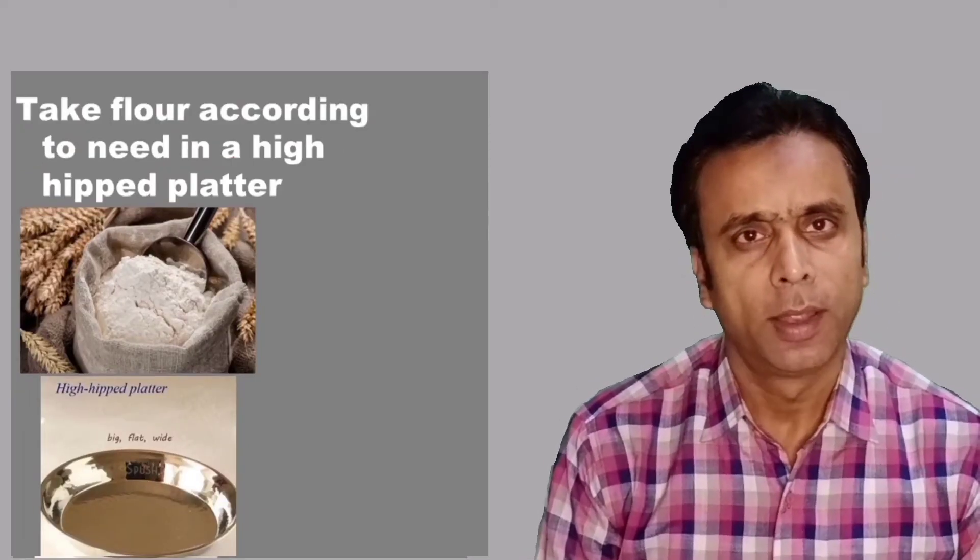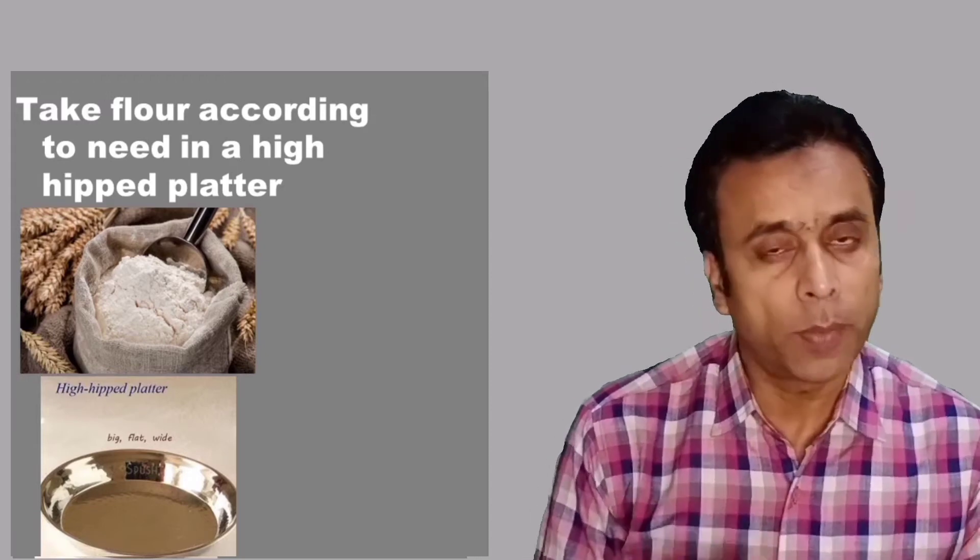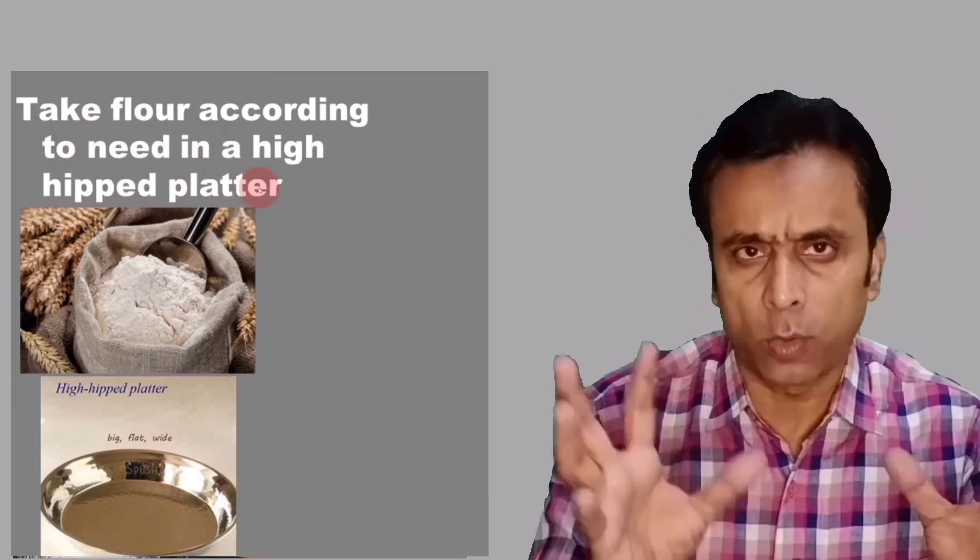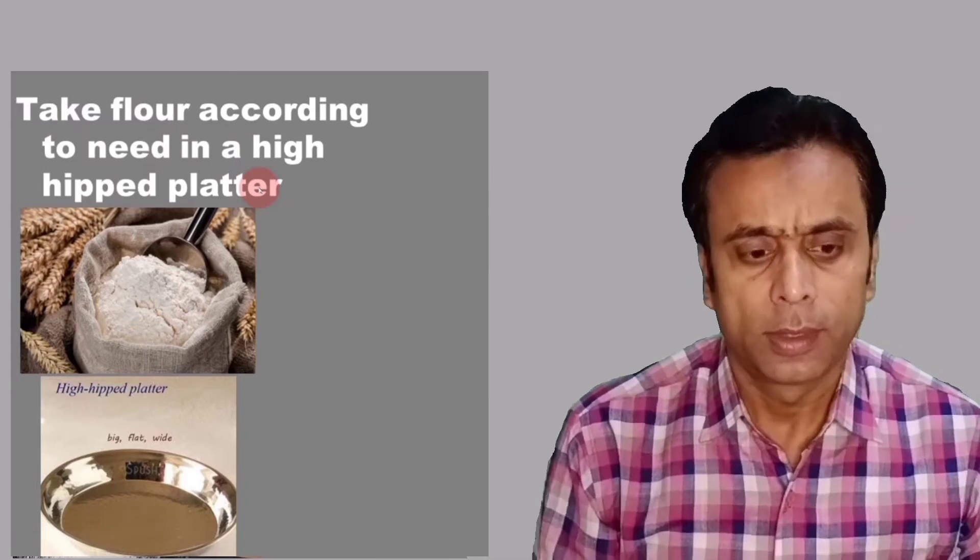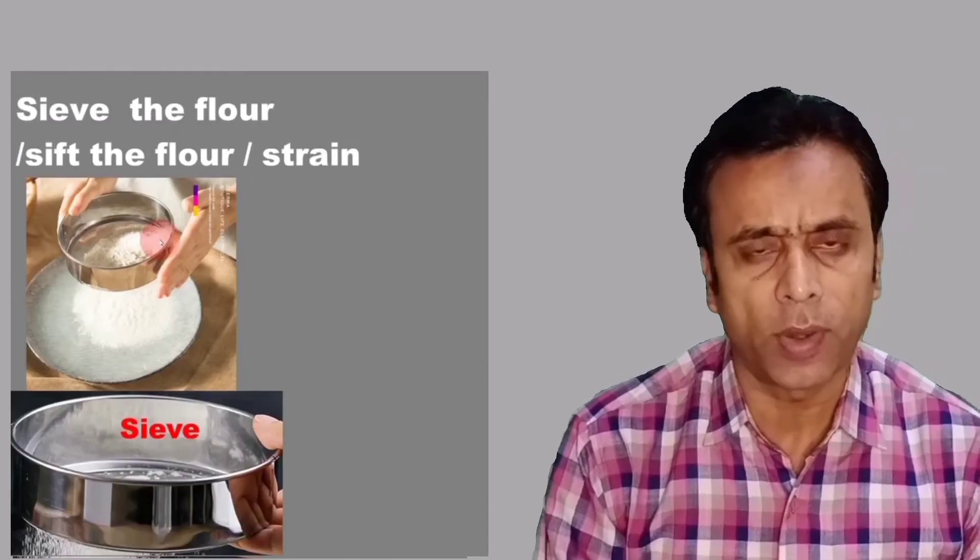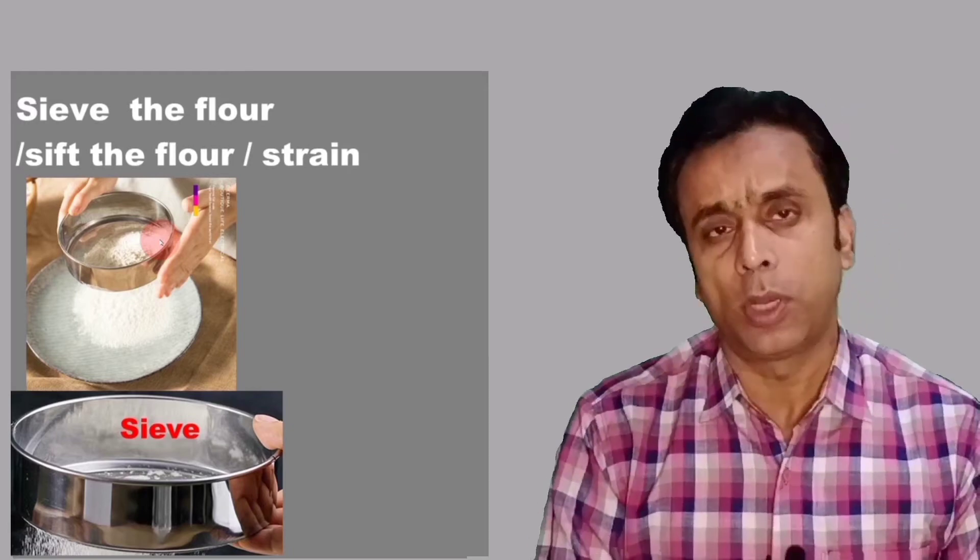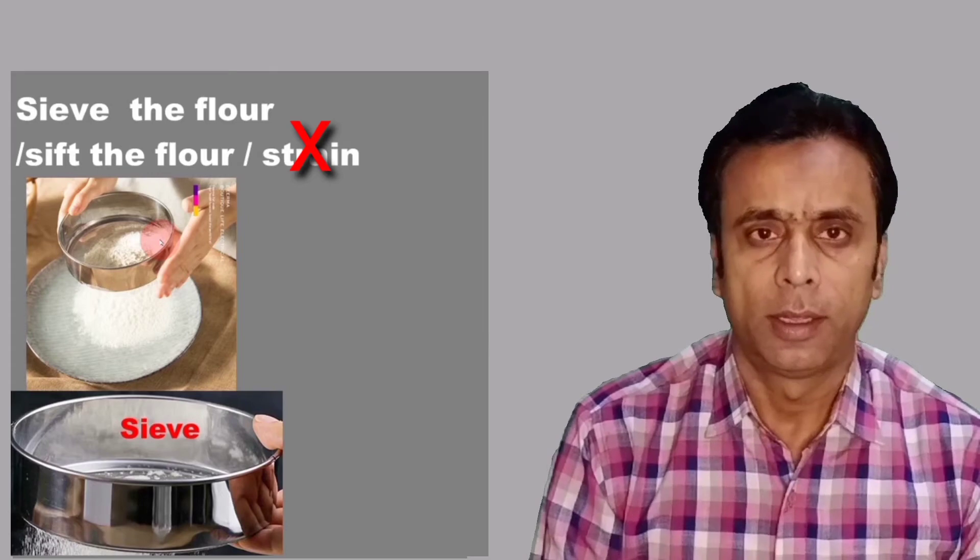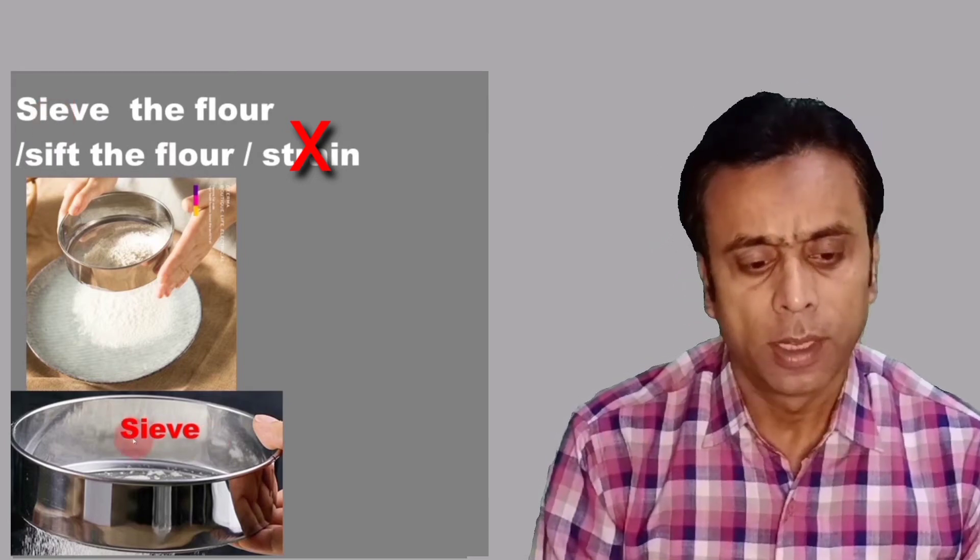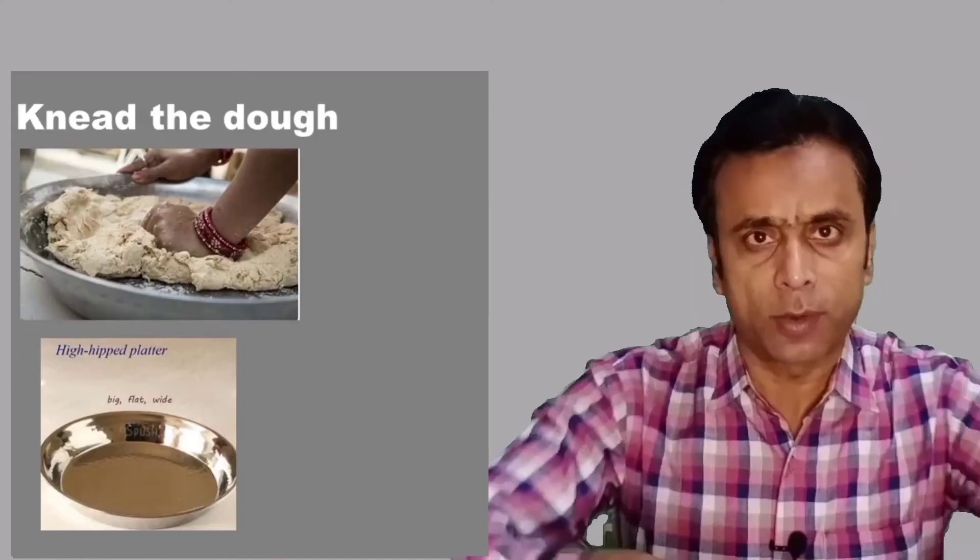After that, let's make rotis. The food is cooked, vegetables are ready. Now let's make chapati. We take flour - remember the pronunciation. Take some flour according to need in a high-lipped platter, the kneading bowl. Some people call it kunda. That's called high-lipped platter. Then we sieve the flour. Sieving is called sieve, or you can say sift the flour. Not strain - strain is for liquids. Sieve is both a verb and noun. The sieve tool is also called sieve.